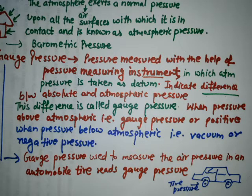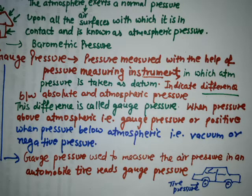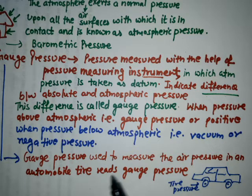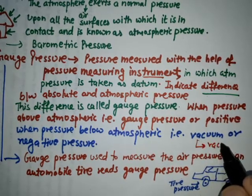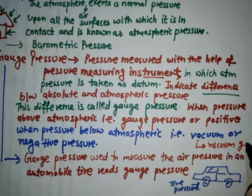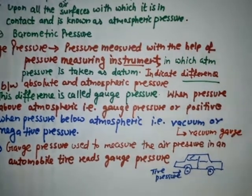When the pressure of a liquid is below atmospheric pressure, the gauge is designated as a vacuum gauge, and the recorded value indicates the amount by which the pressure of the liquid is below local atmospheric pressure — that is negative pressure. Vacuum pressure is defined as the pressure below atmospheric pressure, and it is measured by a vacuum gauge.